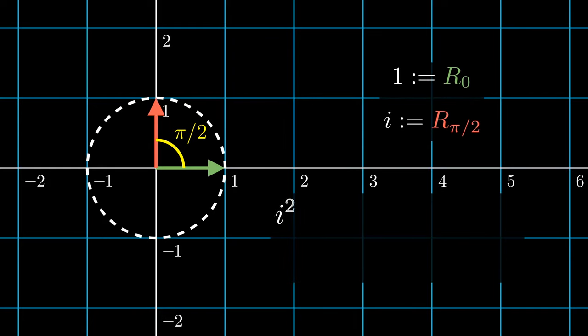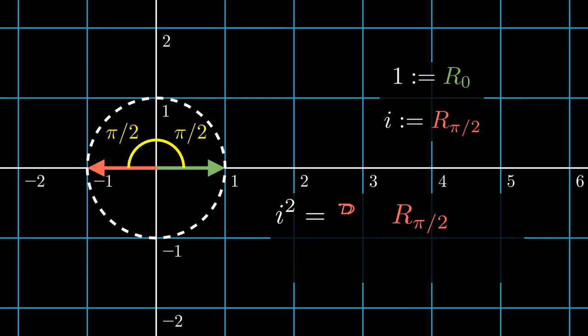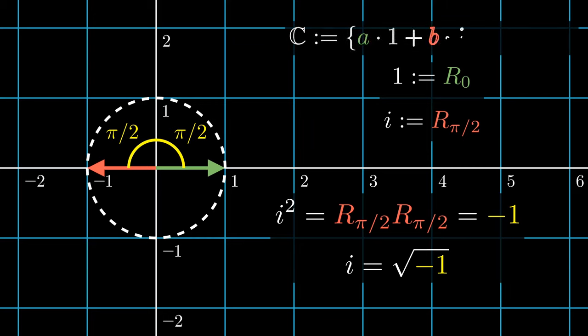What is i squared? Well, i refers to a rotation of pi over 2 radians. And i squared refers to this rotation applied two times. But the landing point of the red vector is simply negative of 1. This tells us that i squared equals negative of 1, which motivates us to write the symbol i equals the square root of negative 1. This is in fact a rigorous way to define the complex numbers.